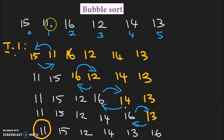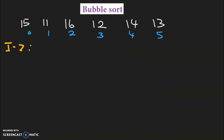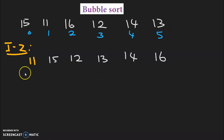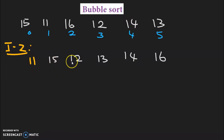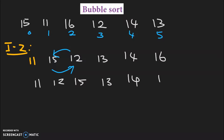Second iteration: we will start from the second element because the first element's position is fixed. In the second iteration, 12 and 15 will get exchanged, and 13, 14, 16 will get exchanged.